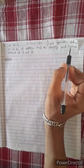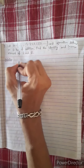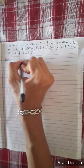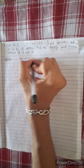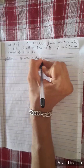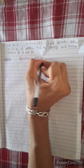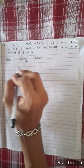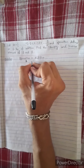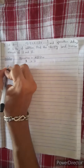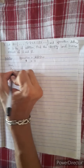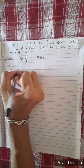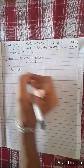We will find identity or inverse elements for 1 or 2. What is the operation? The operation equals addition. We will see the operation of addition. The operation symbol is 0 equals plus. Now we will find identity or inverse.